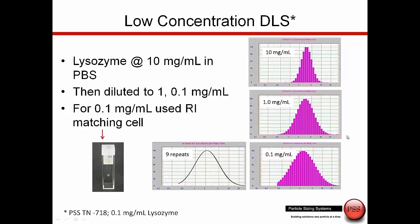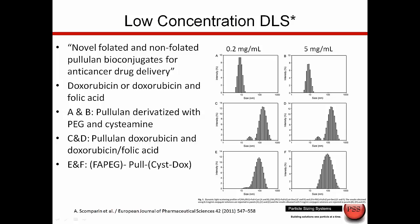I'm mentioning this because in my research for today's talk, I ran into a paper on poliulin bioconjugates — a drug bioconjugated with a polymer, both folated and non-folated. The drug was doxorubicin, and also doxorubicin with folic acid. This data — published in the European Journal of Pharmaceutical Sciences — shows the polymer with PEG and cystamine, with data at 0.2 mg/mL and at 5 mg/mL in the same dataset, demonstrating the ability to create excellent data down at 0.2 mg/mL.